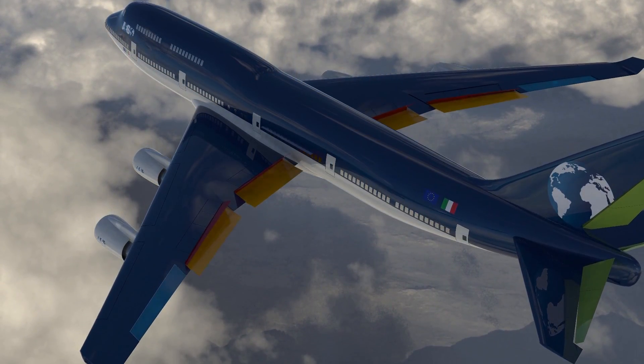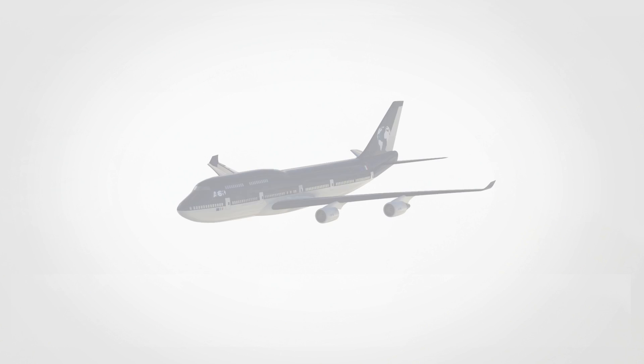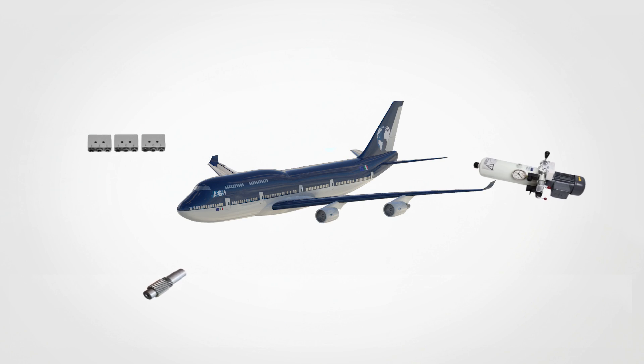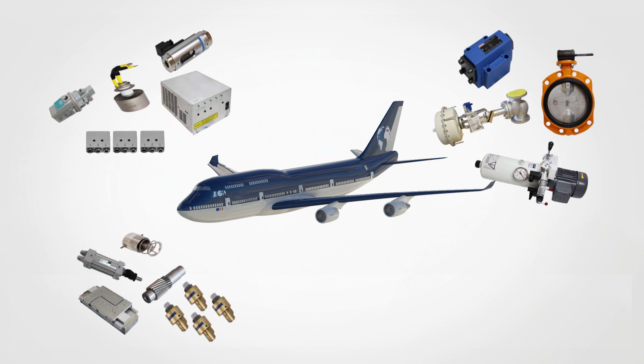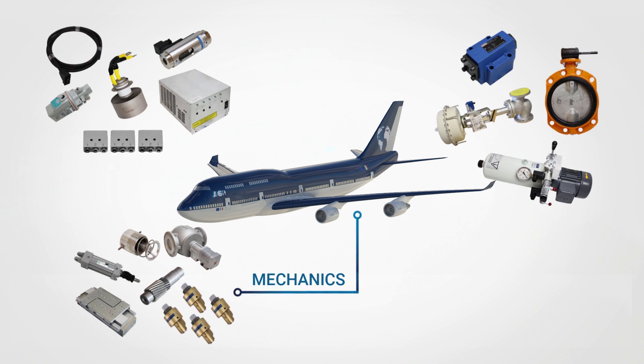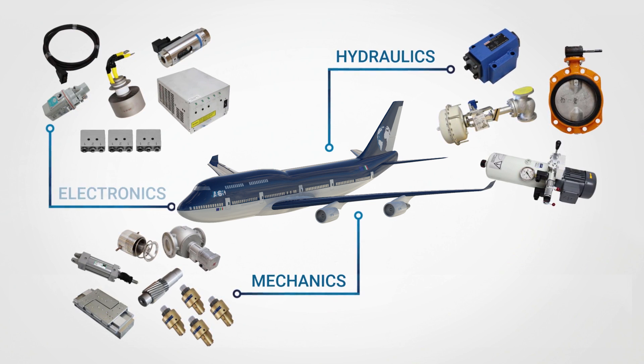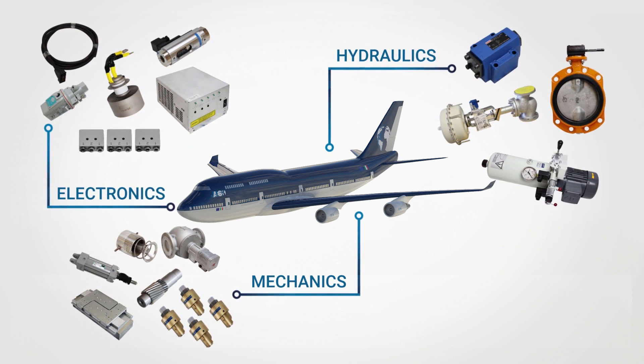Listing every single component of an airplane is almost impossible. The modern airliners, in fact, are composed of a huge variety of mechanical, hydraulic, and electronic components.